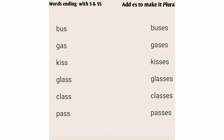Now let's have a look at words ending with S and SS. The second rule is applicable — we add ES to singular words ending with S and SS to make them plural. Here is a list: bus, gas, kiss, glass, class, and pass — all of these words end with S or SS. To make them plural we add ES: bus becomes buses, gas becomes gases, kiss becomes kisses, glass becomes glasses, class becomes classes.